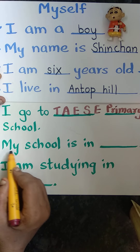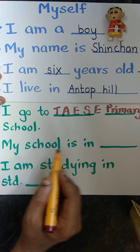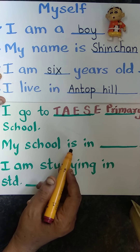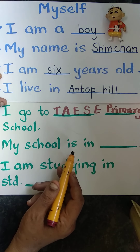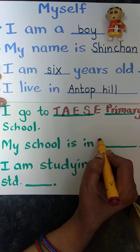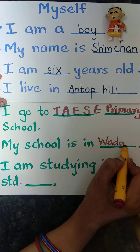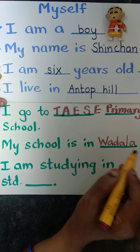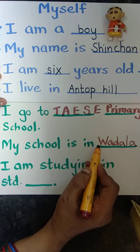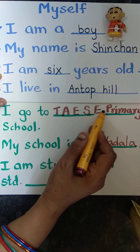Next: M-Y — 'My' — S-C-H-O-O-L — 'school' — I-S — 'is' — I-N — 'in'. My school is in. Where is our school? Wadala, right? So Wadala — we will write the spelling: W-A-D-A-L-A. Now, Wadala is the name of the place, so the first letter is capital. Here also the school's name — first letter, all capital. Remember?